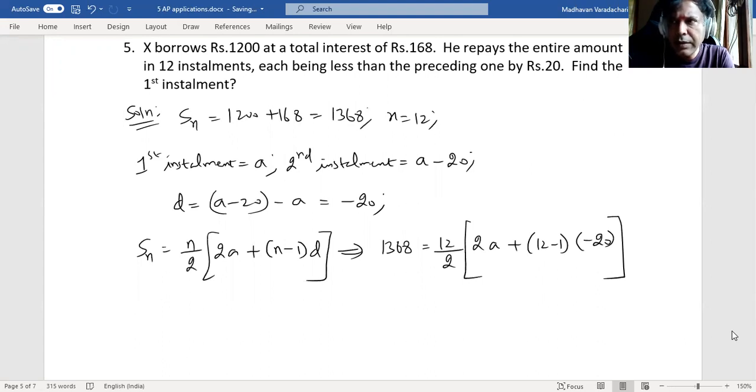So this will give us, cross multiplying, we will have 2736 by 12 is equal to 2a plus 11 into negative 20 is minus 220.